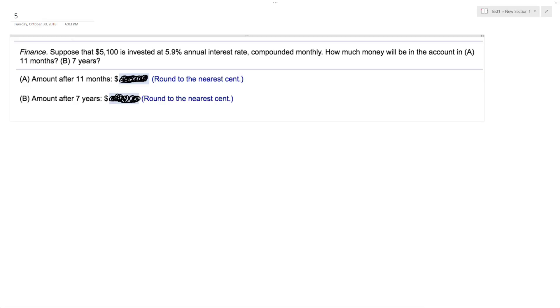So let's suppose we have $5,100, and it's got an annual interest rate of 5.9%, compounded monthly. That's going to be the case for both A and B of this. How much will be in the account after 11 months, and then how much will be in the account after seven years?